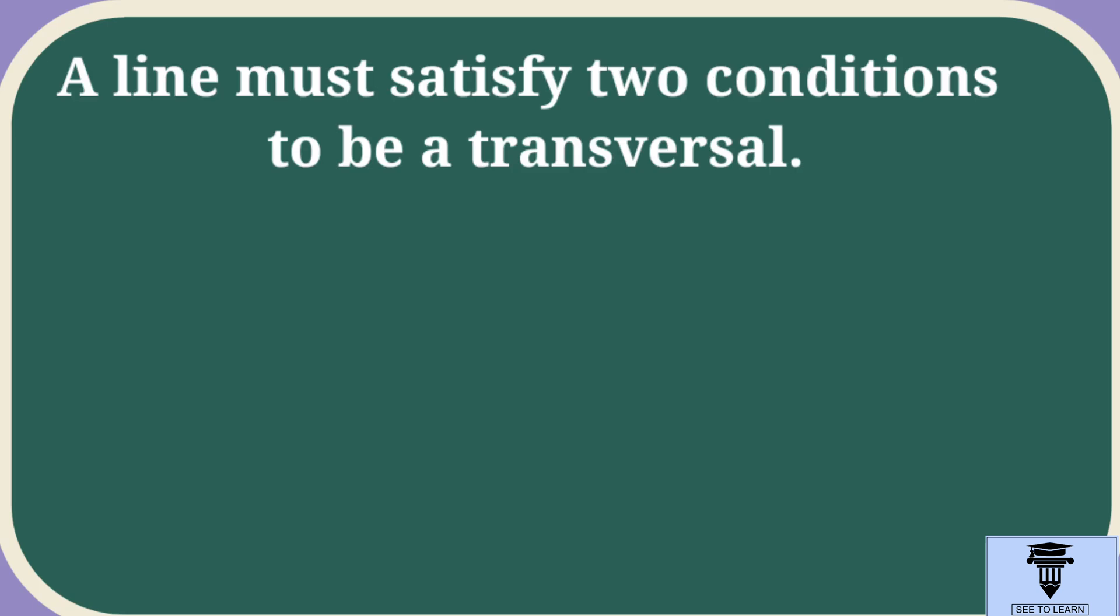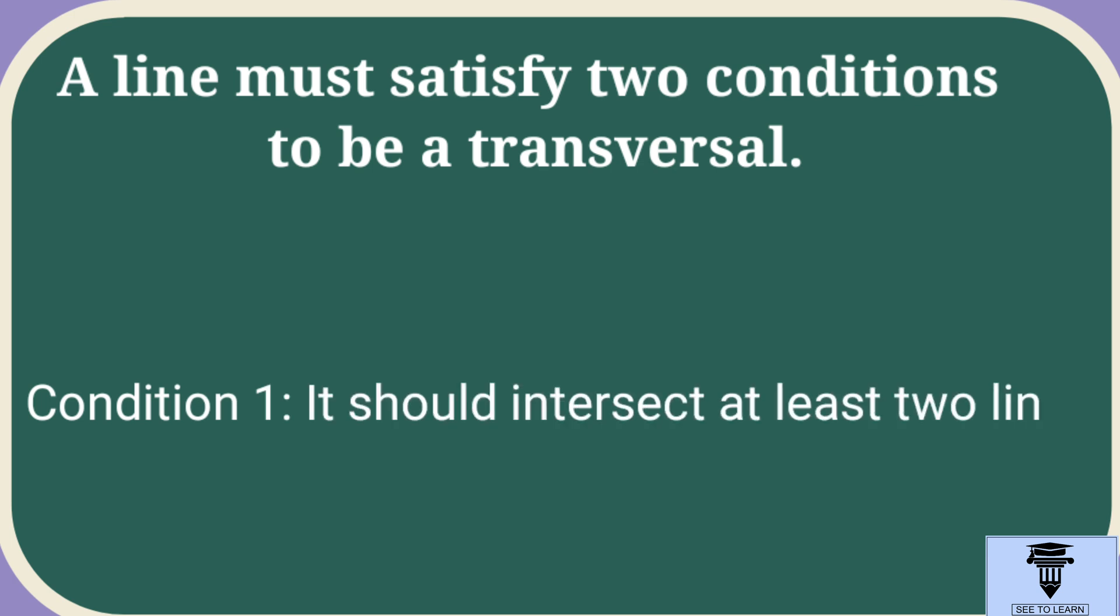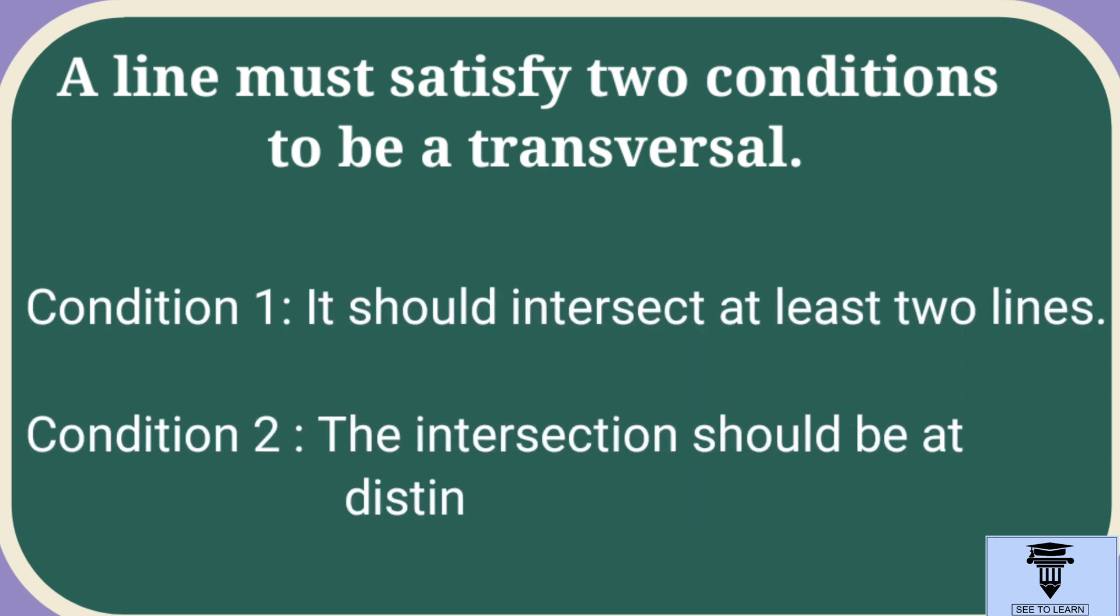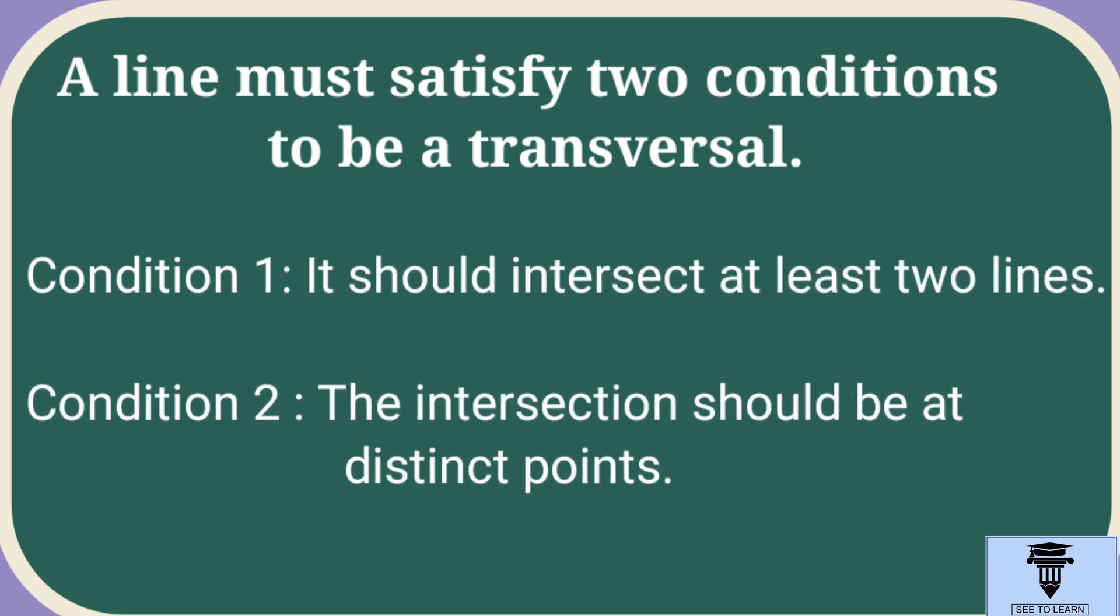A line should satisfy two conditions to be a transversal. First, it should intersect at least two lines. Second, the intersection should be at distinct points.